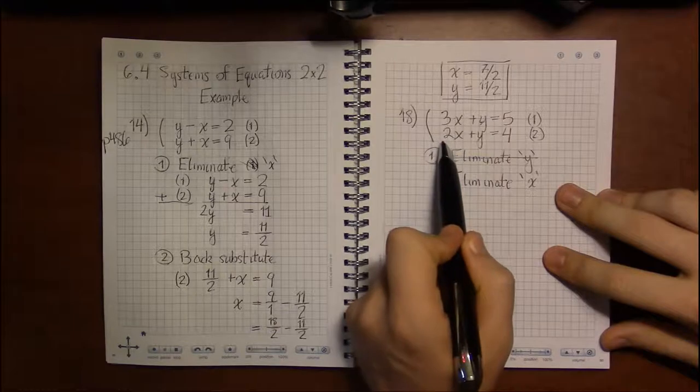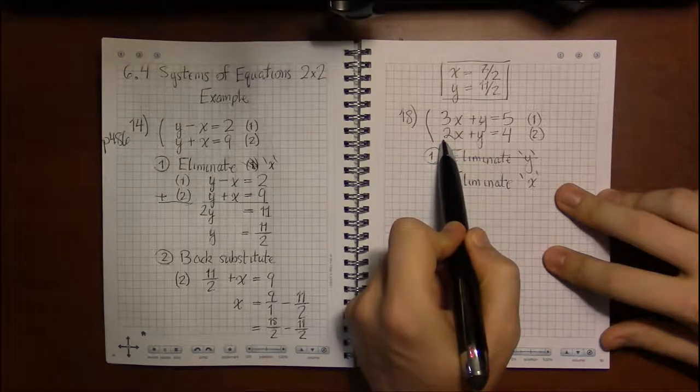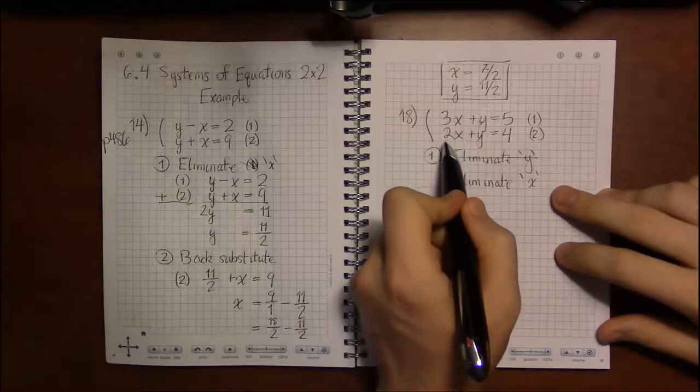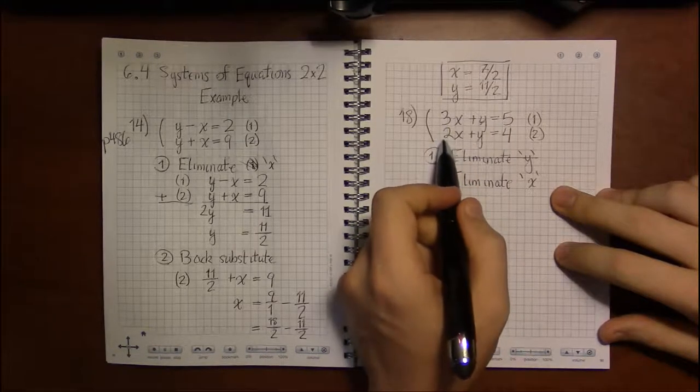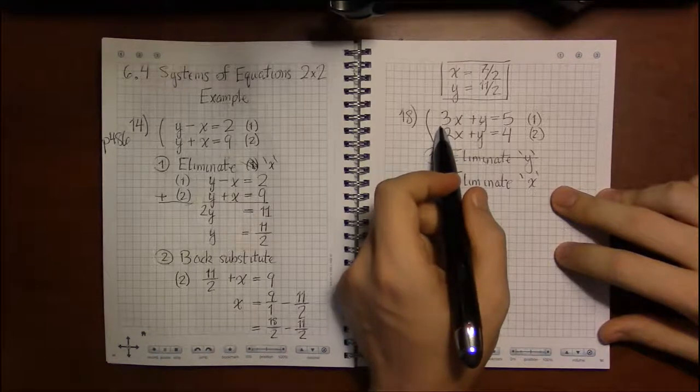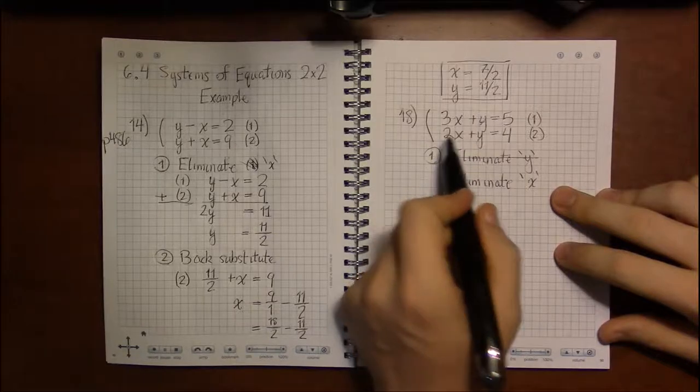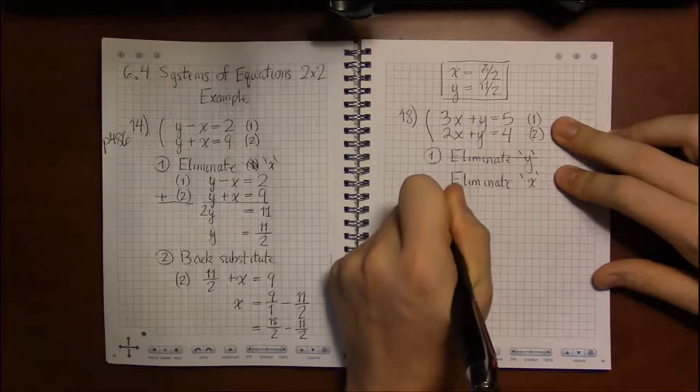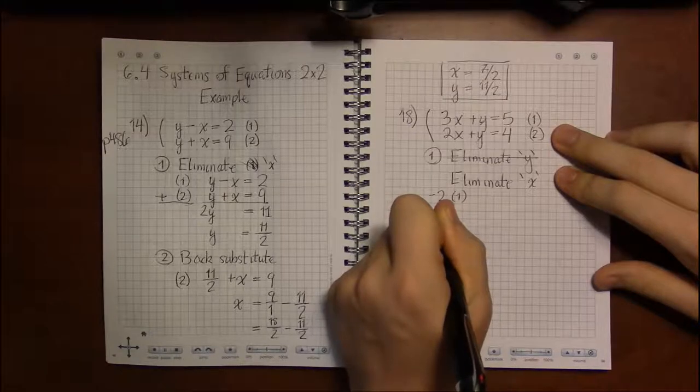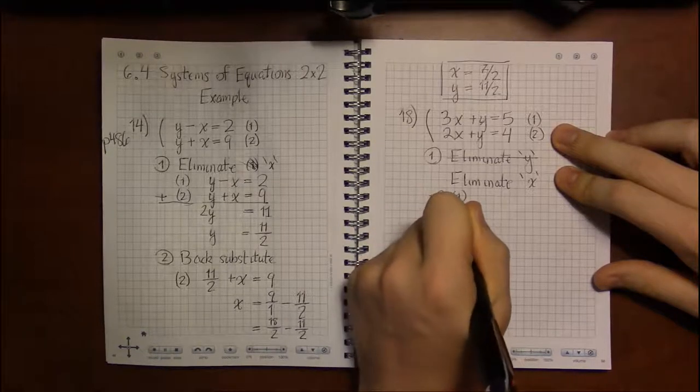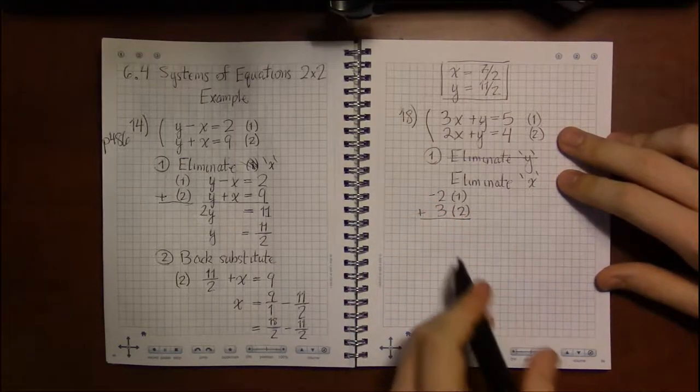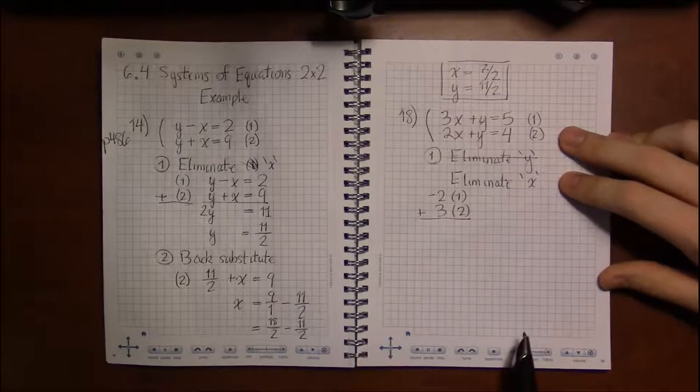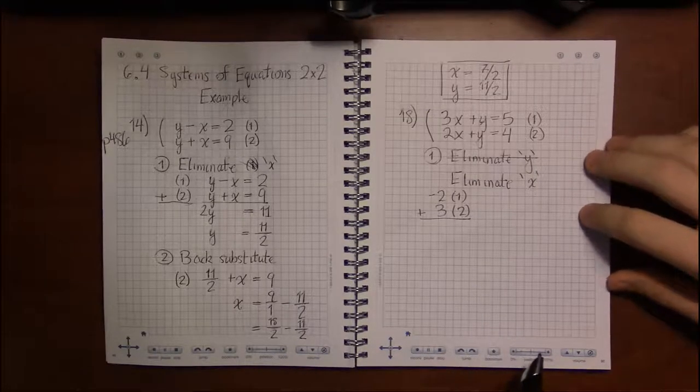So we need to look at a number which 3 and 2 divide evenly into, and that number is 6. So we're going to want to make one of these a plus 6x and one of these a minus 6x so we can eliminate them. We can do that by taking equation 1 and multiplying by minus 2, and then taking equation 2 and multiplying it by 3. We could have done equation 1 times positive 2 and equation 2 times minus 3. That's arbitrary, and it really doesn't make a difference in the difficulty whatsoever.